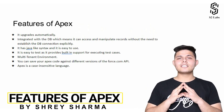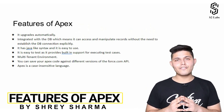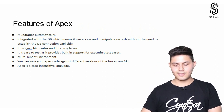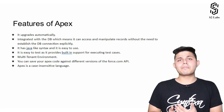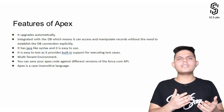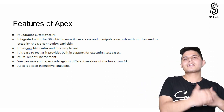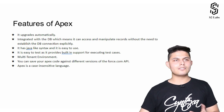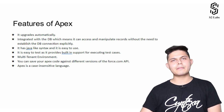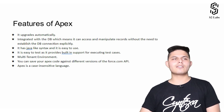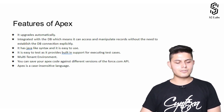The next thing we'll be talking about is features of Apex, which are written down over here. Let's have a look at all of them one by one. The first feature is that it upgrades automatically. What that means is that you do not have to download the latest version of a particular compiler or runtime. It all happens automatically, so you do not have to worry about maintaining the updated version of Apex, the compiler, or anything associated with it.